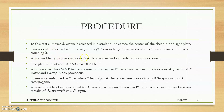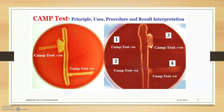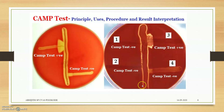A known group B Streptococcus may also be streaked similarly as a positive control if needed. The plate is incubated at 37°C for 18 to 24 hours. A positive CAMP test appears as an arrowhead-shaped zone of hemolysis at the junction of the two streaks. If the test isolate is not group B and is not producing CAMP factor, the result is negative — no arrowhead appears.